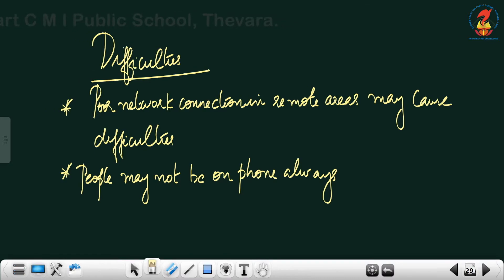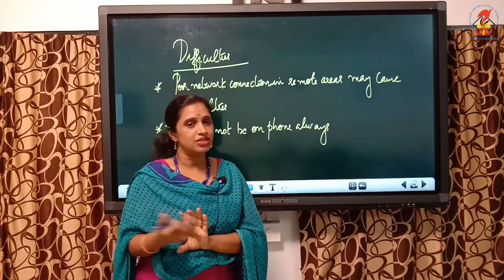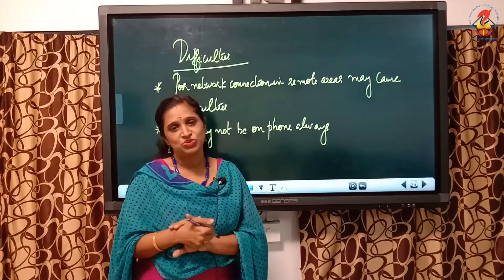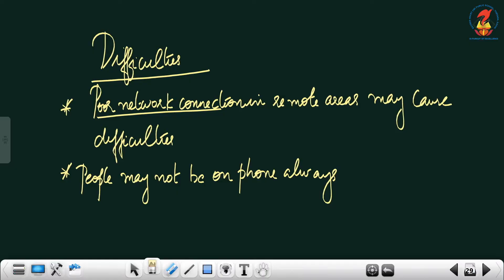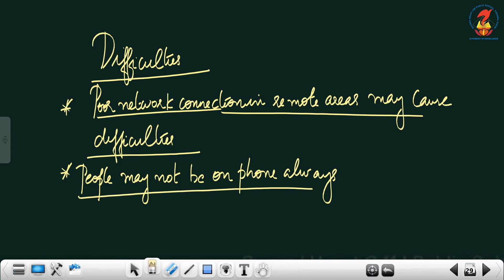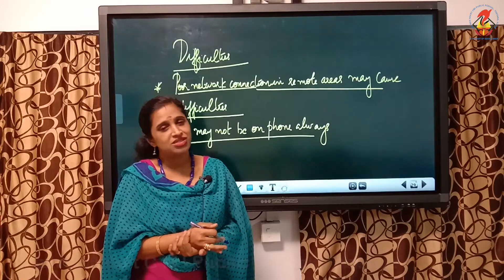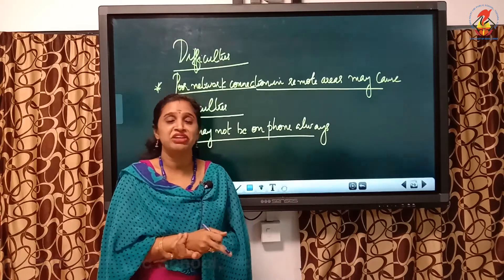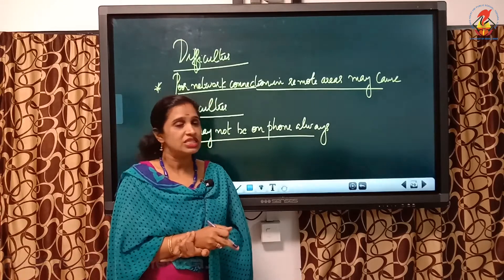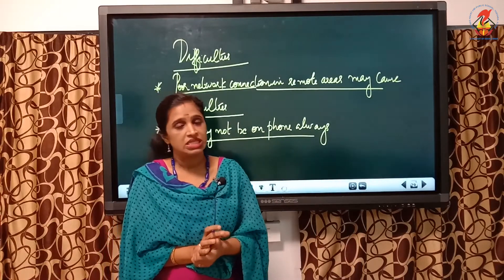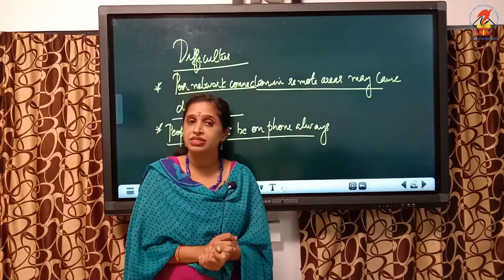The difficulties of telephone interview are: first, in certain remote areas, the network connection is very poor, which may cause difficulties. Second, people may not be on their phone always — some people may not have the habit of carrying the phone with them every time, making it very difficult for the interviewer to collect information. These are the difficulties associated with telephone interview, which is the second basic method of collecting data.